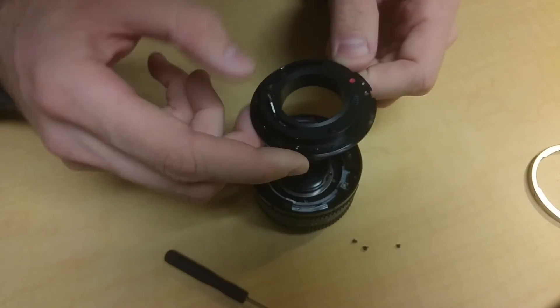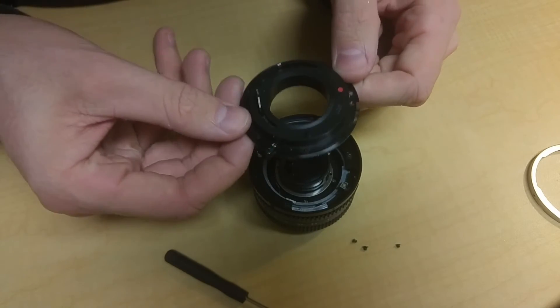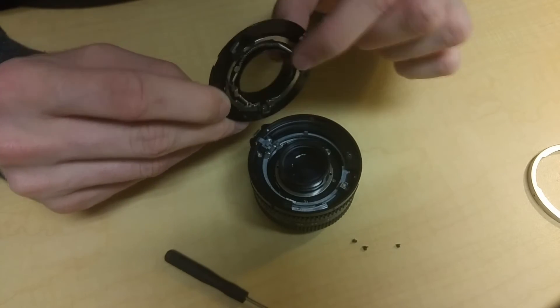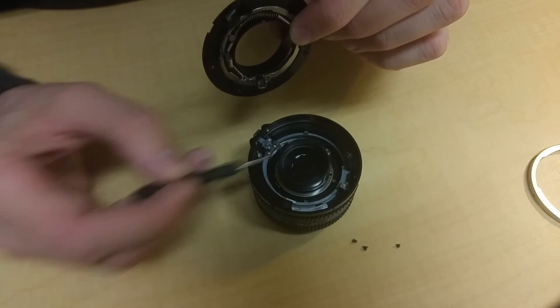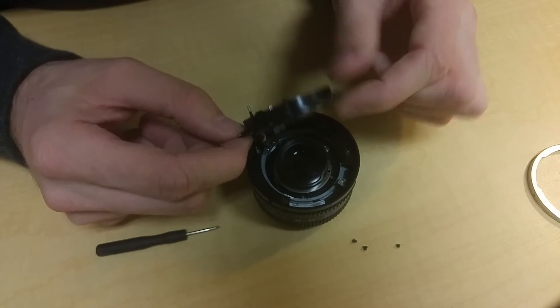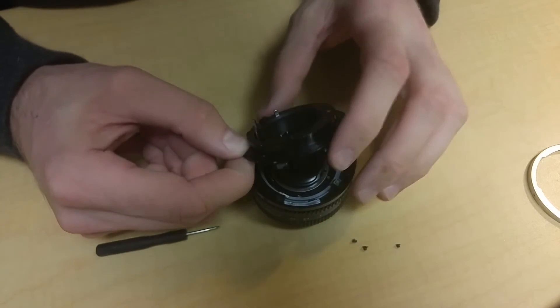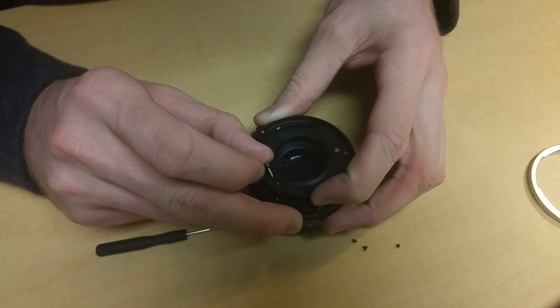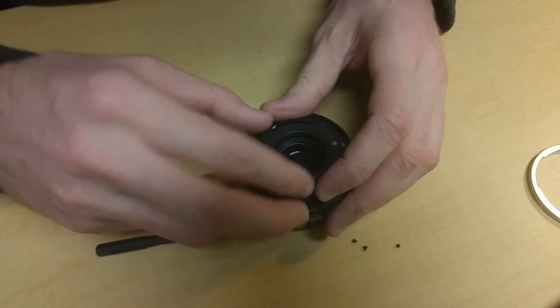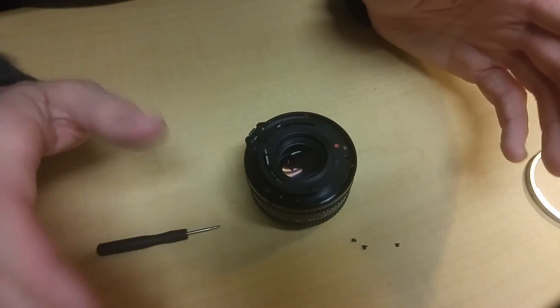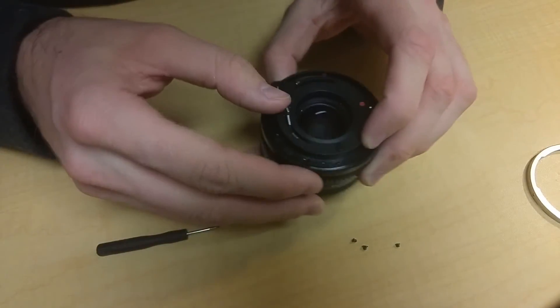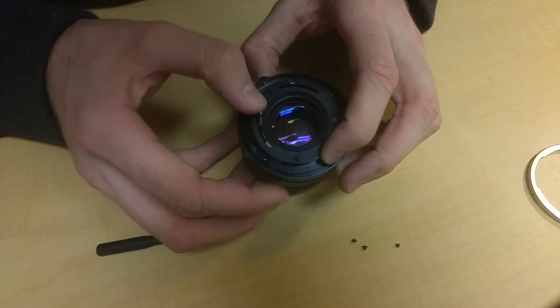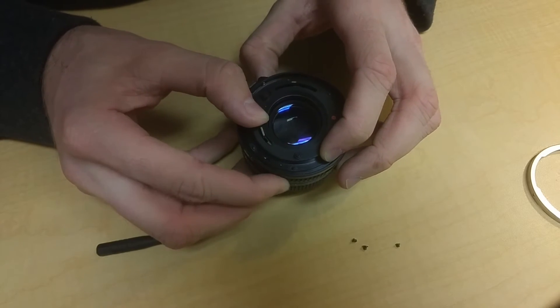And now you want to take this and pretty much just align this with that right there, and then just go ahead and set it in there. But before you set it in there, you want to pull this up, and then you can go ahead and set it in there. Now as you can see, aperture will open. It's a bit stiff because you have to push this up to open it, but it'll open and it works.